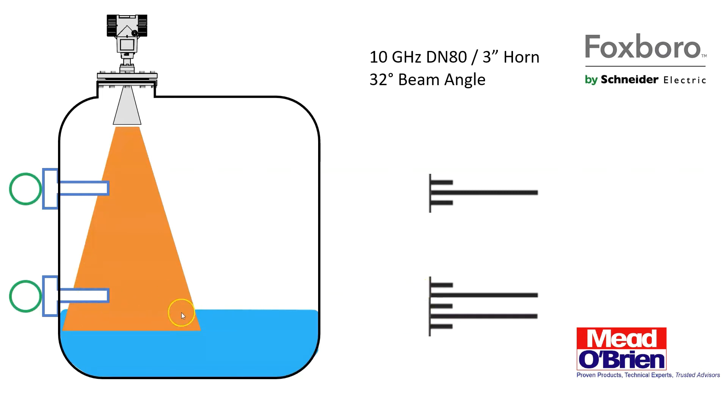What you as a user could do is tell the radar, ignore this. That's not the level. That's a thermal well. And ignore this. That's a thermal well. That's not the level. And the radar goes, okay, I'm going to ignore these two signals, reflections I get from these. And you go on your way.